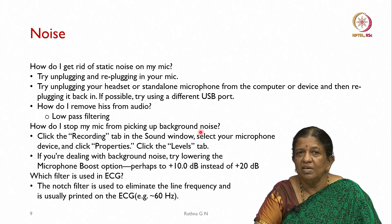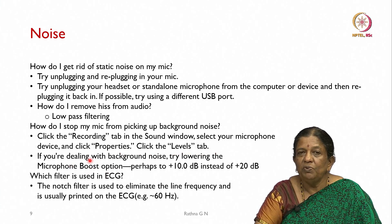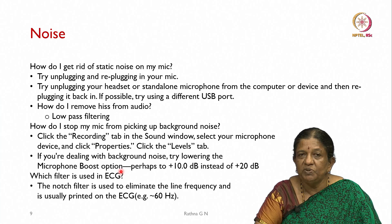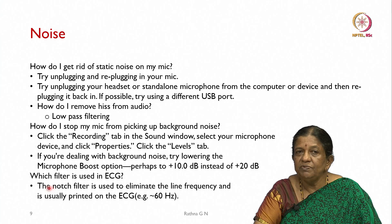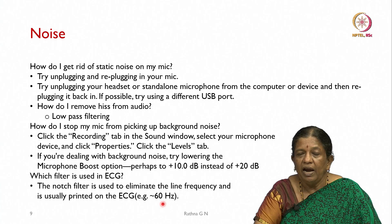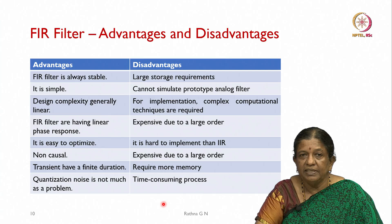To stop a microphone from picking up background noise, go to the recording tab in the sound window, select your microphone device, click properties, then the levels tab, and lower the microphone boost option — for example, reduce it from +20 dB to +10 dB. For ECG signals that carry line frequency (60 Hz in the USA, 50 Hz in India), a notch filter is used to eliminate this line frequency.